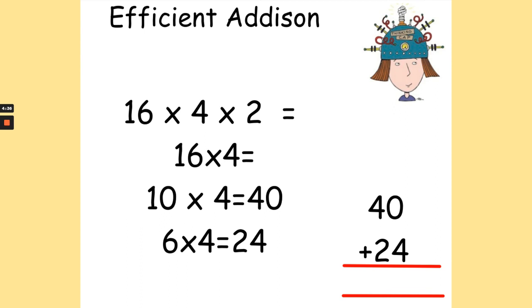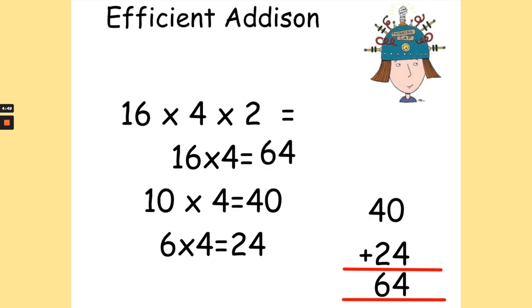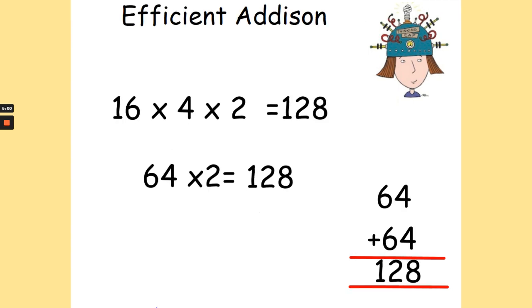I need to add 40 add 24. I know 0 add 4 is 4, and 4 add 2 is 6. So 16 times 4 is 64. And now I need to multiply that by 2. So I need to double 64 by 2. If I find that hard, I can add. So 64 add 64, 4 add 4 is 8, and 6 and 6 is 12. 16 times 4 times 2 is 128.